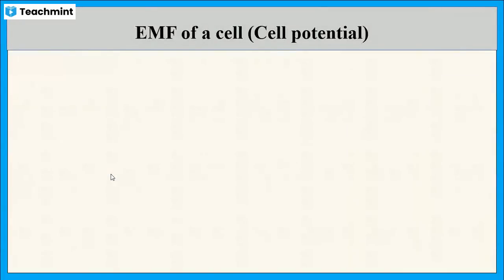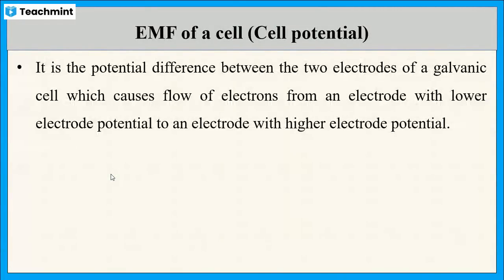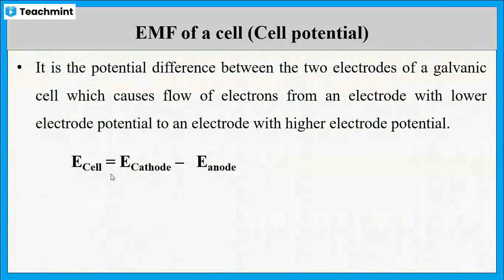Now let us see briefly about the EMF of a cell or the cell potential. EMF of a cell is the potential difference between two electrodes of a galvanic cell. When this potential difference causes a flow of electrons from the lower electrode potential to the higher electrode potential, the EMF of the cell is represented as: E_cell = E_cathode − E_anode.